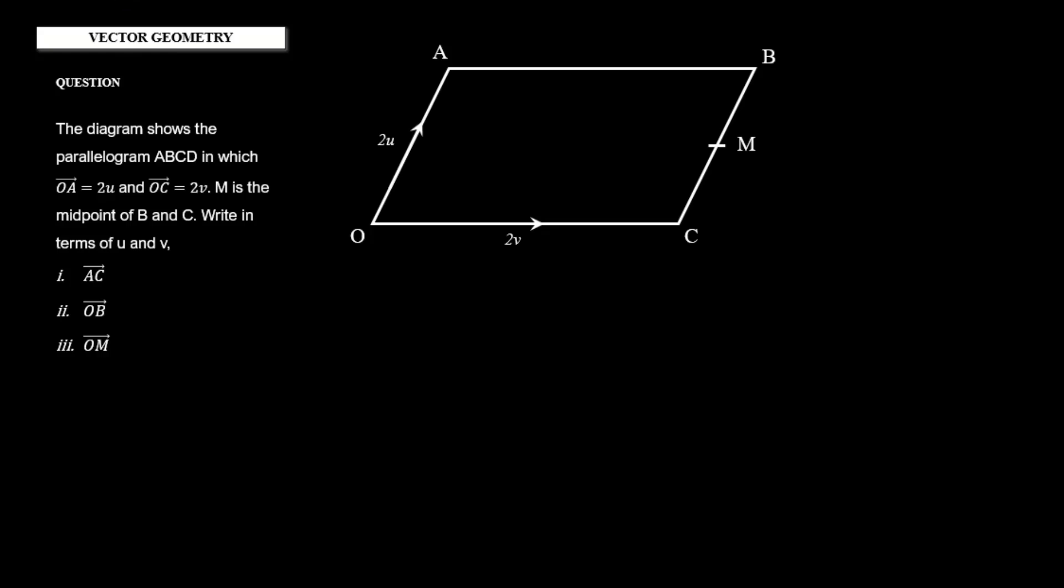Whenever we're working problems in vector geometry, the whole idea is that we're applying what we know about vectors to geometric problems. To do stuff like this, there are two main things that we need to know: the types of vectors, which I've described and linked below, but it's very important for us to know that—that is equal, opposite, and parallel vectors.